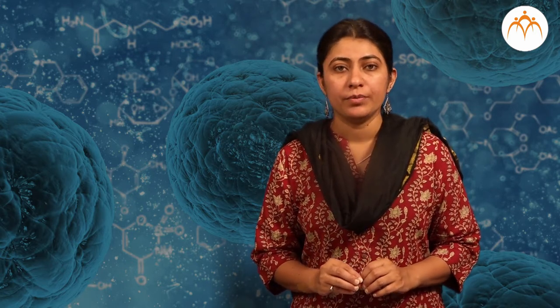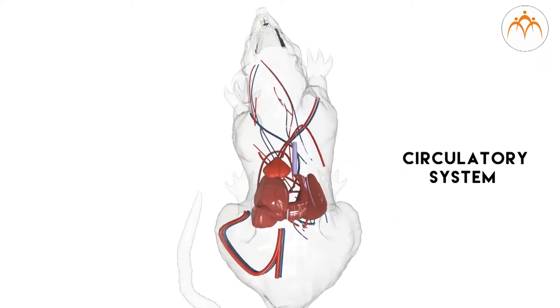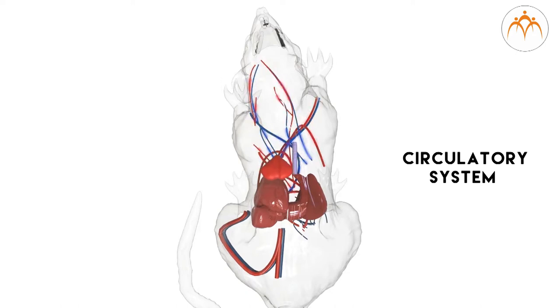Apart from the digestive system, there are many other important organs that can be seen inside the body. The heart of the rat acts as a pumping organ and is located in the chest region. Structurally, it is similar to the human heart, having four chambers. There is closed blood circulation in rats. The heart, blood, and blood vessels constitute the circulatory system of the rat.